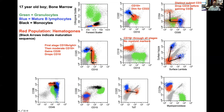CD19 is positive through all stages — it's a pan B cell marker and doesn't have quite the maturation spectrum of CD20. Hematogones are defined by CD19 positivity. They do not express any myeloid markers; these are normal B cells. There are two more myeloid markers in this panel — CD33 and CD15 — and again, hematogones and mature B cells do not express myeloid markers.